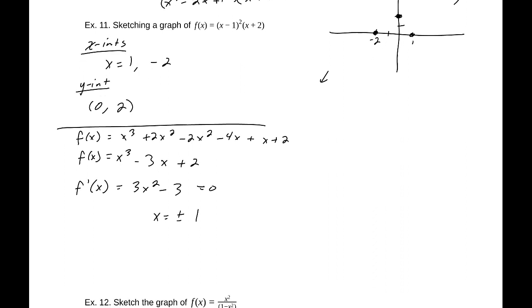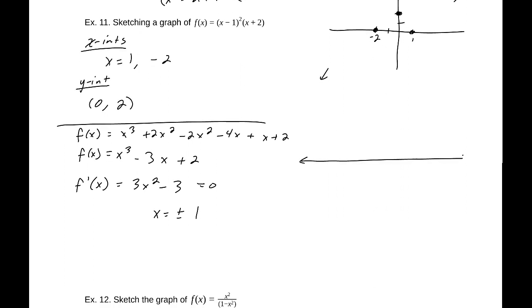Drawing a sign diagram with critical points at x = -1 and x = 1: plugging in 0 gives -3, so the function is decreasing between -1 and 1. Plugging in 2 gives a value bigger than 3, so it is increasing past 1. At x = -2 the derivative is still positive. So the function increases on (-∞, -1), decreases on (-1, 1), and increases again after 1.